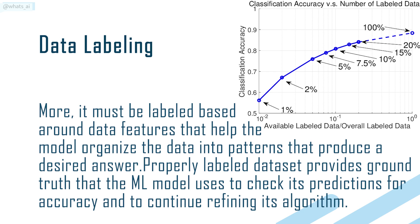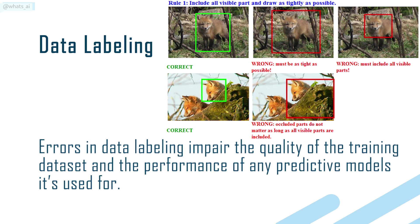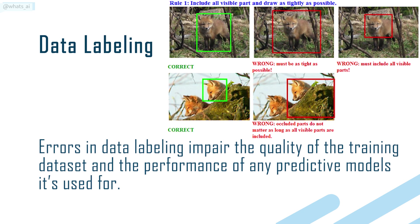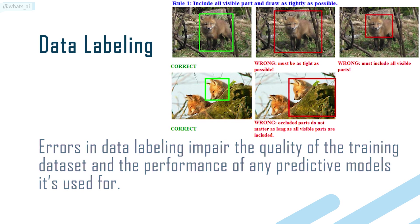A properly labeled dataset provides a ground truth that the ML model uses to check its predictions for accuracy and to continue refining its algorithm. Errors in data labeling impair the quality of the training dataset and the performance of any predictive models it's used for.